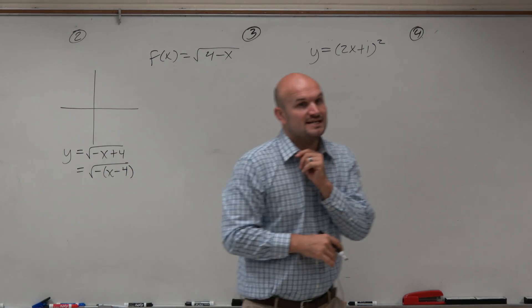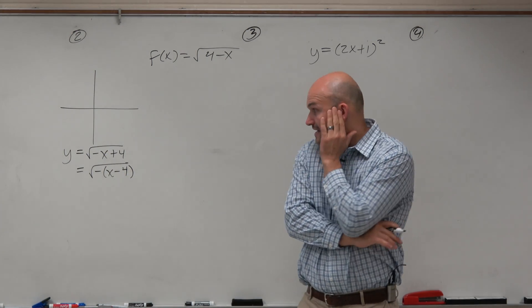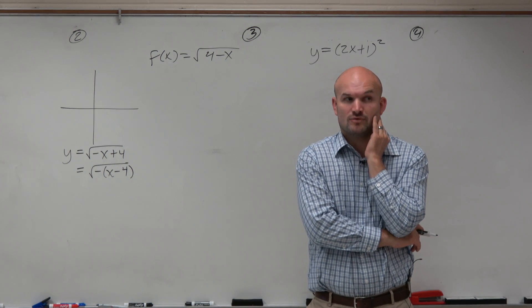You factor out the negative x, because this is not the first time we've done this. And therefore, you recognize that is a square root graph being reflected about the y-axis and shifted four units to the right.